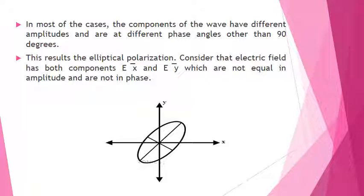This results in elliptical polarization. Consider that the electric field has both components EX and EY which are not equal in amplitude and are not in phase. If the amplitudes are not equal and the phases are not equal, then it is said to be elliptical polarization. This is all about EM waves.